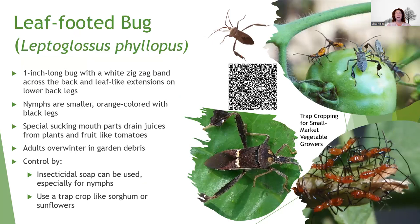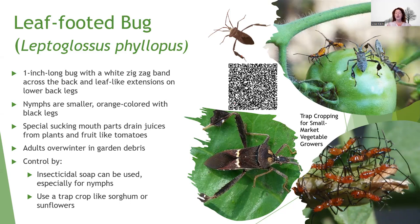Leaf-footed bugs — if you've got tomatoes, you probably have these annoying things. They have an incomplete life cycle, so the nymphs look like small versions of the adults as they grow up and change color. They suck the juices out of your plants and overwinter in garden debris, so practice garden hygiene. Use insecticidal soap for the nymphs. You can also use trap crops — I use sunflowers and sorghum planted nearby, and these bugs tend to be more attracted to those. If you find them congregating on a sunflower head, you can knock them all into a bag, squish them, and end the life cycle for that year.